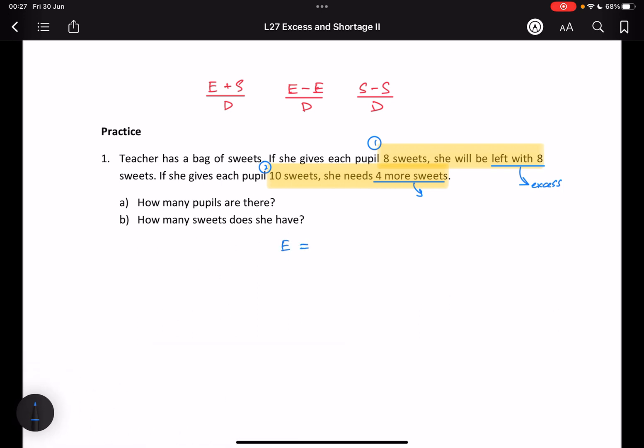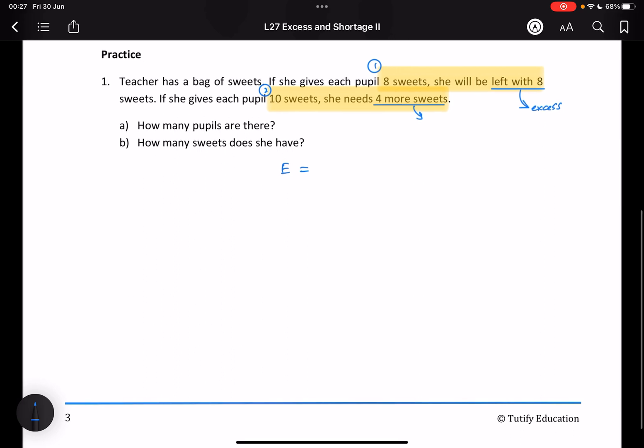The excess is eight because I have eight extra sweets. What is the shortage? Four because I'm short of four sweets. What is the difference between the number of sweets that I'm giving to them?